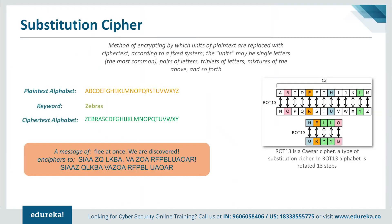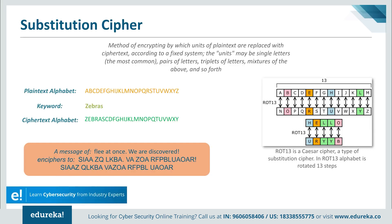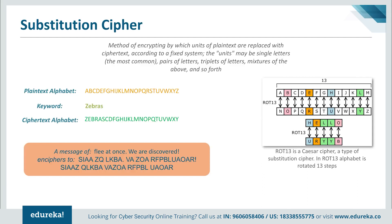Moving on, we are going to discuss substitution cipher. Substitution of single letters — simple substitution — can be demonstrated by writing out the alphabet in some order to represent the substitution, termed a substitution alphabet. The cipher alphabet may be shifted or reversed, creating the Caesar and Atbash ciphers respectively, or scrambled in a more complex fashion, in which case it is called a mixed or deranged alphabet. Traditionally, mixed alphabets may be created by first writing out a keyword, removing repeated letters, then writing all the remaining letters in the usual order. Using the keyword 'zebras,' we get a cipher text alphabet: ZEBRAS followed by all the alphabets we missed in the zebras word — so ZEBRAS followed by ACDFGH and so on.